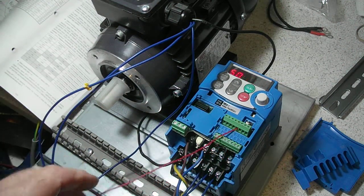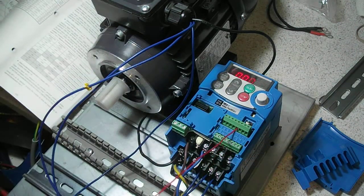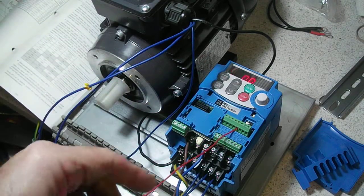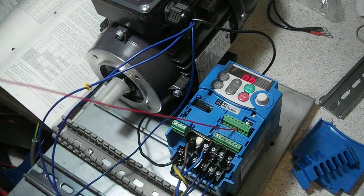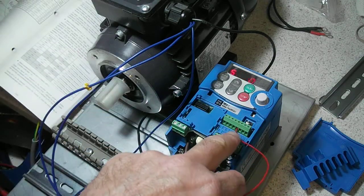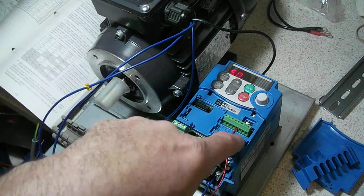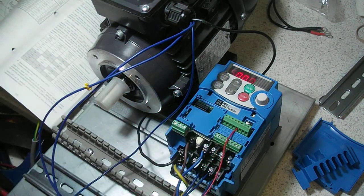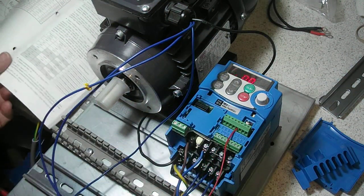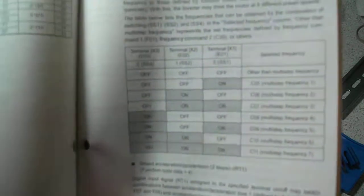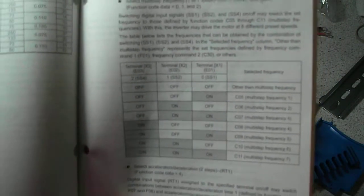Now on these inverters there is a 24 volt power supply inside them, so there's 24 volts available on this PLC terminal here, and you can use that to pulse these other three here: X1, X2, and X3. With this particular model, you can have up to seven different frequency settings from the combination of those three inputs.